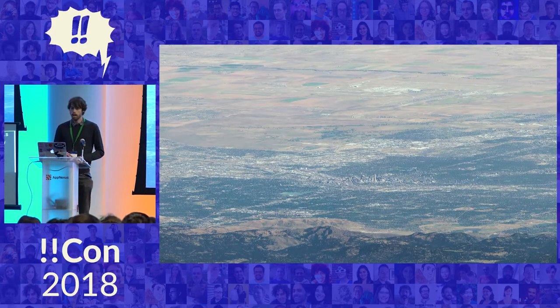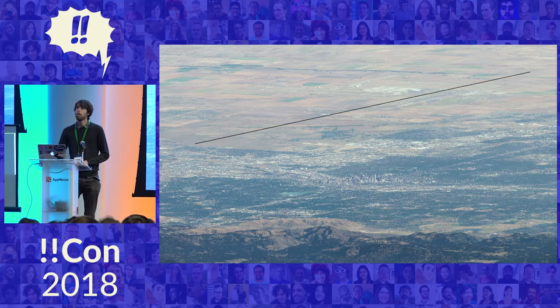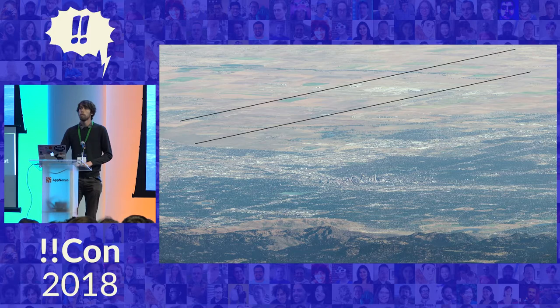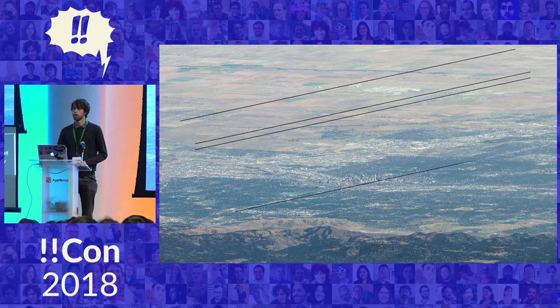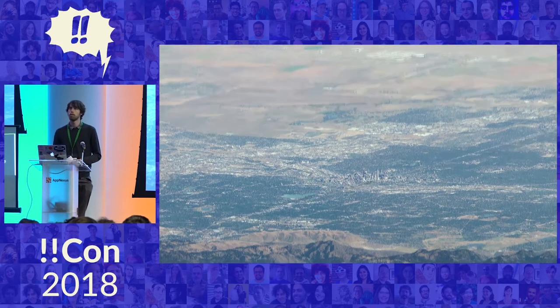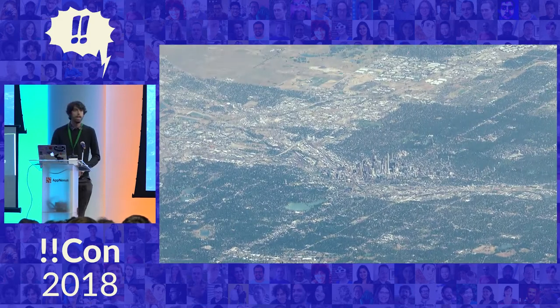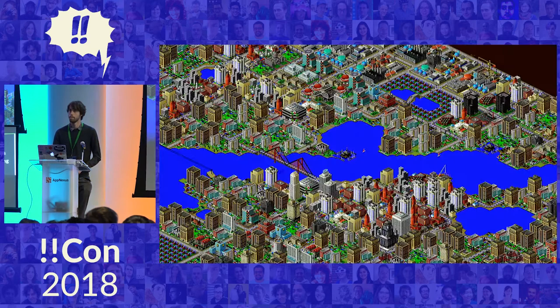If we zoom in on the airport, notice that the runways at the top are perfectly parallel to each other. They're parallel to the highways and roads as well. And they're parallel because there's no perspective in this image. If we take this perspective-less image and stretch it out vertically a little bit, it starts to look like something familiar and quite important to me.